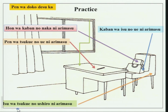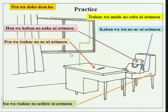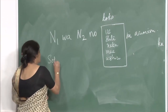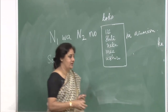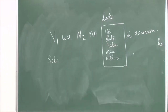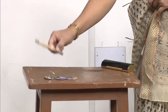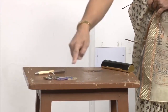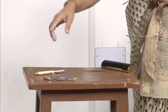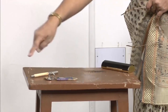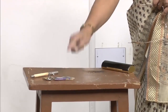Tsukue wa doko desu ka? Tsukue wa mado no soba ni arimasu. Mado is a window. Soba is a new word meaning nearby. For example: kagi wa doko desu ka? Kagi wa pen no soba ni arimasu — it is close by. Soba means nearby or close by.